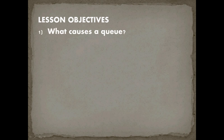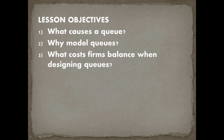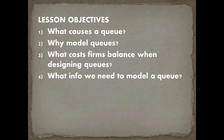So what were our lesson objectives? First, what causes a queue — variation. Second, why we model queues — to minimize total cost for a business. Third, what costs firms balance when designing queues — service cost versus wait cost. Fourth, what info we need to model a queue — arrivals, service rate, and number of servers, with optional elements of maximum queue length or population size. Finally, we discussed types of queues in terms of their stages and number of servers. That concludes this lesson. I look forward to seeing you again next time.